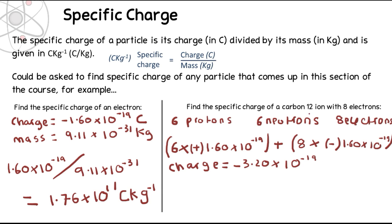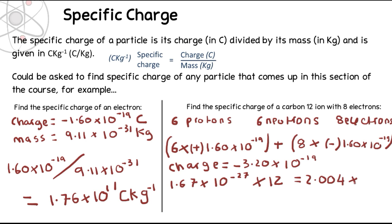Now we want to work out the mass of this carbon-12 ion. For this part, we can forget about electrons because their mass is so small it's negligible. The mass is going to be 6 protons plus 6 neutrons. We can assume protons and neutrons have the same mass, which is 1.67 times 10 to the minus 27 kilograms. Because we've got 12 nucleons in total, we multiply that by 12, giving an answer of 2.004 times 10 to the minus 26 kilograms.